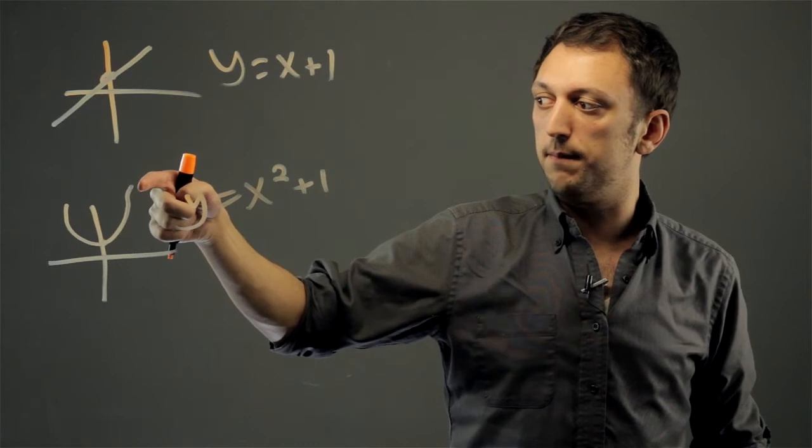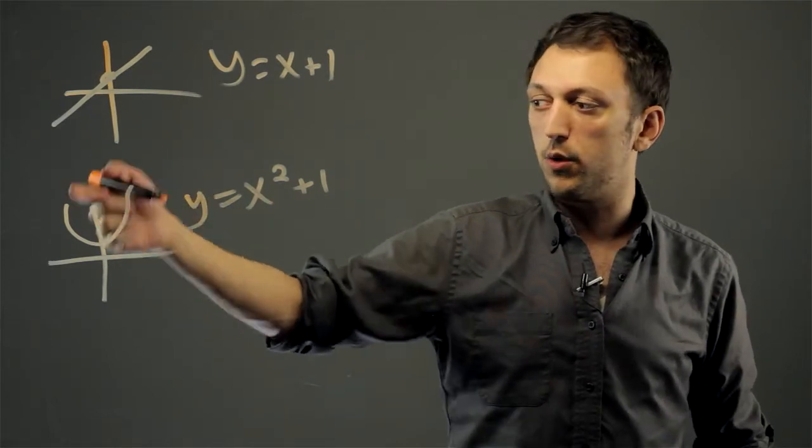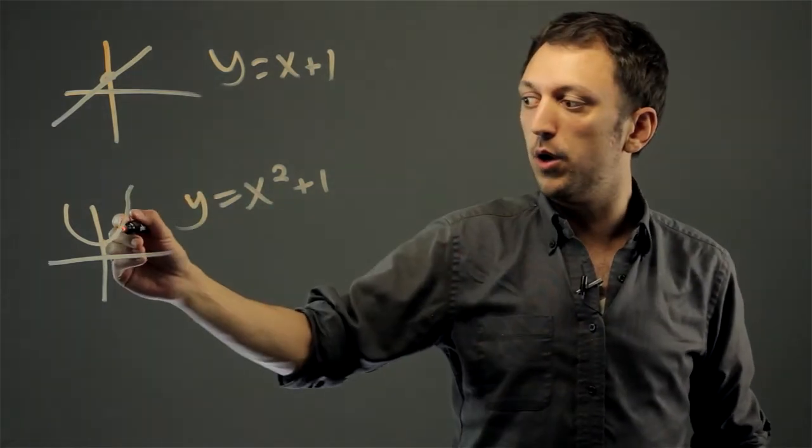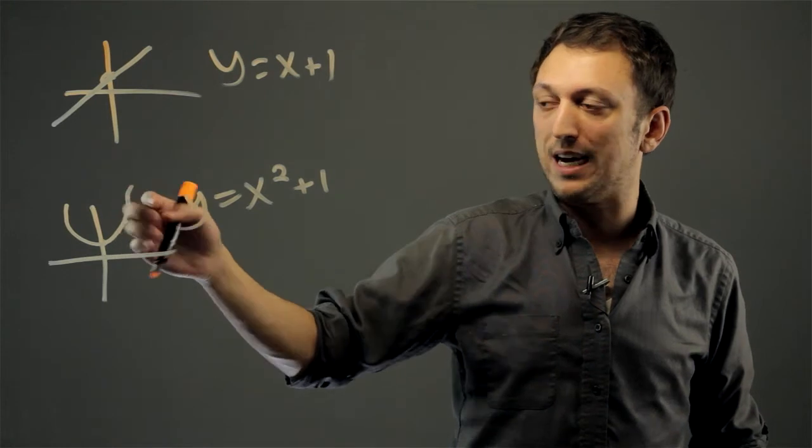So when you have a curved line, you now have a nonlinear equation, and your slope, there would be a slope, but it's constantly changing.